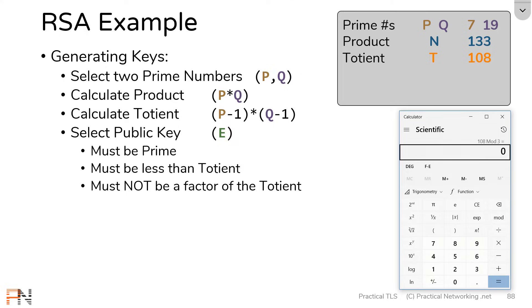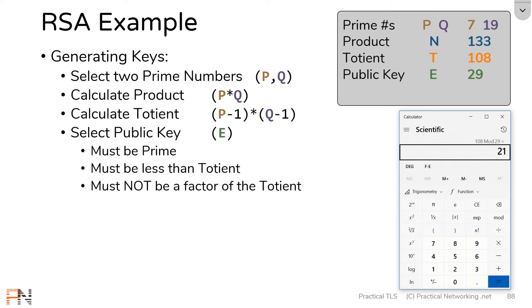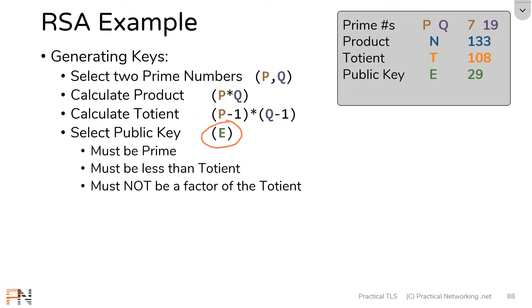There are many values that we could use, however. For example, 5. 5 is prime. 5 is less than the totient. And if we did the exact same math, 108 mod 5, you'll see that there is a remainder, meaning 5 is not a factor of the totient. So 5 would totally be acceptable for this example. Now for the sake of my slides, we're going to go ahead and use the public key value of 29. 29 is a prime number. 29 is less than 108. And 29 is not a factor of 108, because there's a remainder when you do the modulus operation. So our public key value, which we're going to call E, is going to be 29.